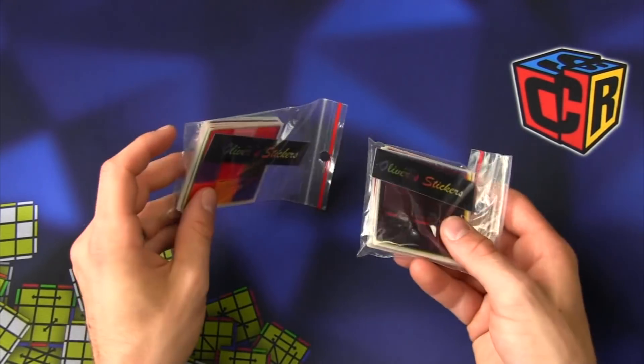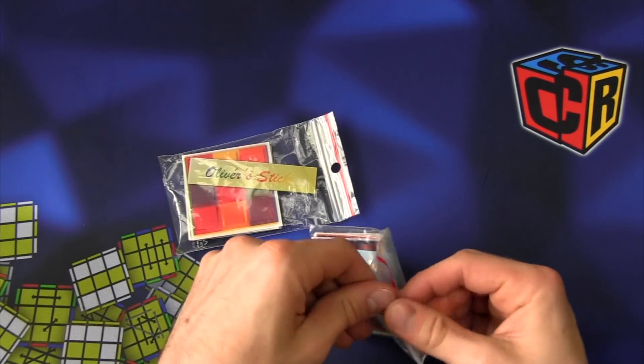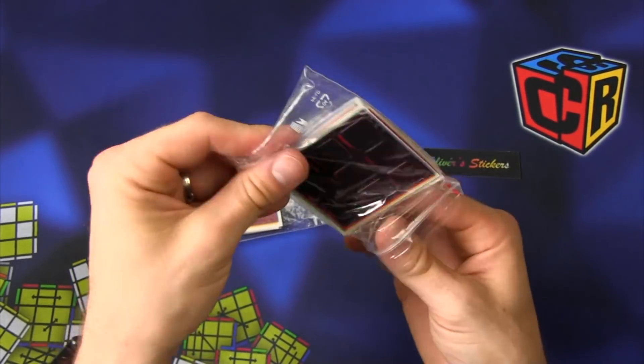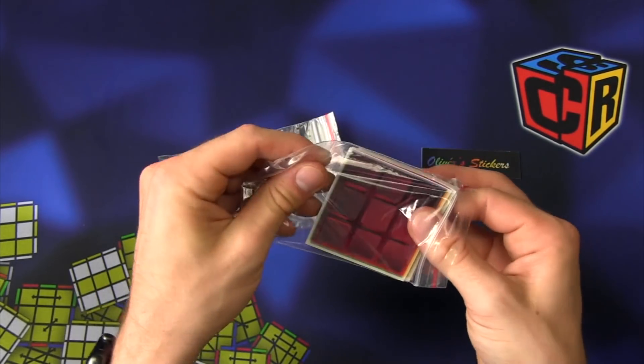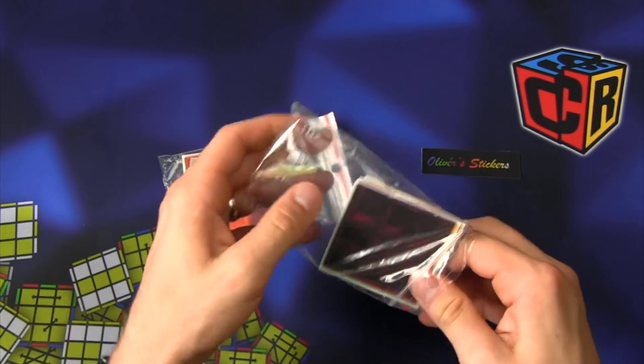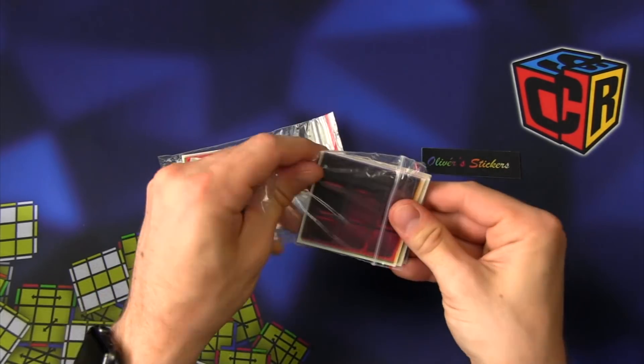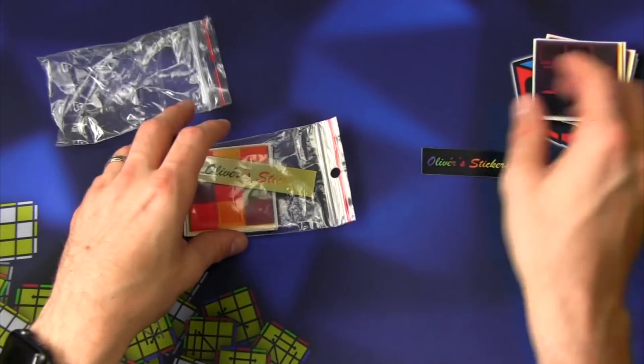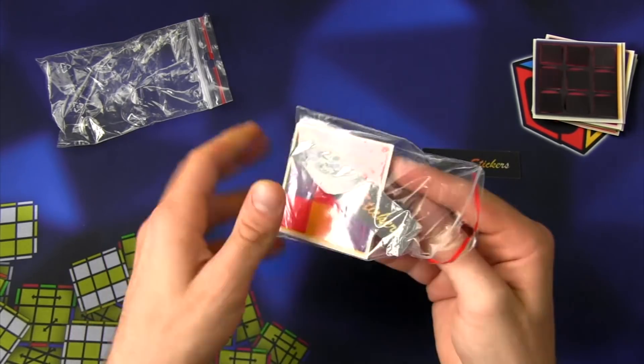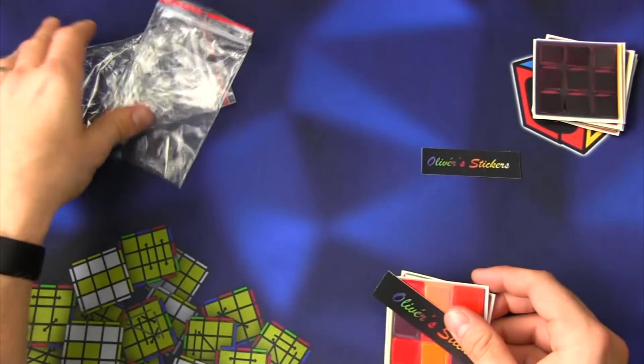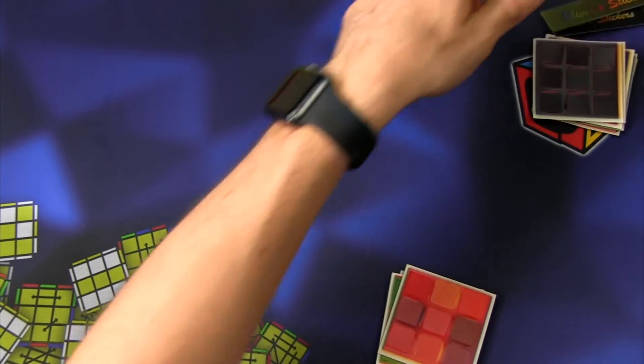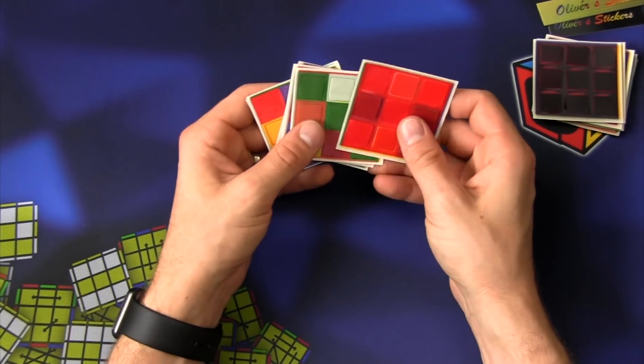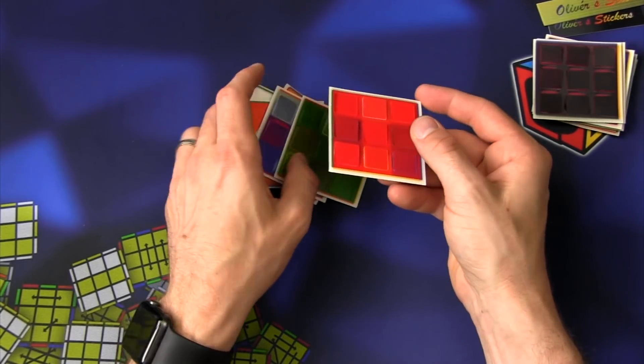Oliver Stickers. So SpeedCubeShop has been working with Oliver Stickers to share some of their products and I have the set of stickers that hides, turns black, and then the ones that change colors. So I'm actually going to do two videos for this because I'm going to add some solves and if I do a bunch of solves that's going to make the video really long on both of these. So I'm going to do this first one on the color changing ones.